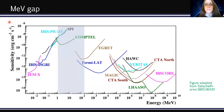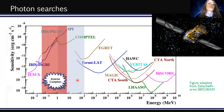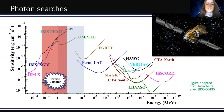When dealing with photon searches from sub-GeV dark matter, one has to deal with the MeV gap. In this plot showing sensitivity as a function of energy for several experiments, you can see that in the energy window between 1 MeV and 100 MeV there is a scarcity of experiments. What we propose is that sub-GeV dark matter can produce photons with energy much lower than their mass, thanks to inverse Compton scattering, and this contribution falls in the energy range covered by the INTEGRAL SPI data — so we can study sub-GeV dark matter using INTEGRAL.